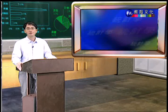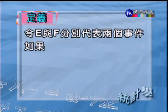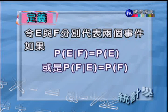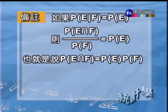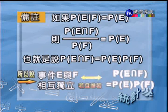再來看下一個主題，叫做事件的獨立性。令 E 與 F 分別代表兩個事件，如果 P(E|F) = P(E)，或者 P(F|E) = P(F)，那就代表 E 與 F 兩個事件相互獨立。這表示有沒有 F 的發生，並不影響 E 這個事件發生的結果。由定義可進一步推導：若 P(E∩F) = P(E) × P(F)，則稱 E 與 F 相互獨立。